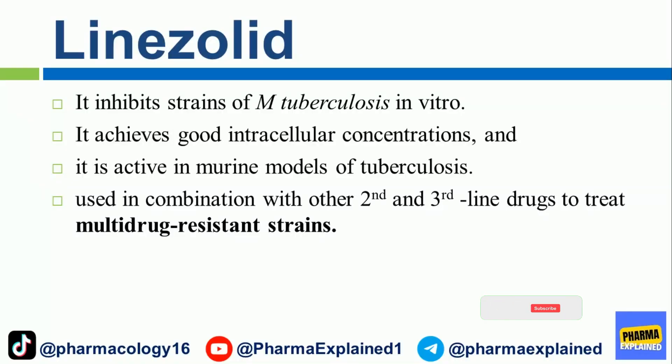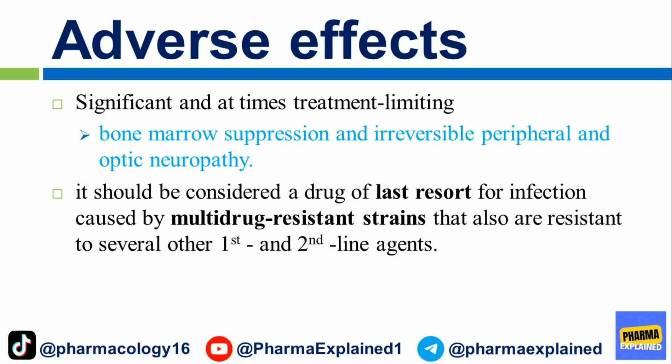Linezolid inhibits strains of M. tuberculosis in vitro, achieves good intracellular concentrations, and is active in murine models of tuberculosis. Used in combination with other second- and third-line drugs to treat multi-drug-resistant strains, its adverse effects are significant and at times treatment-limiting, including bone marrow suppression and irreversible peripheral and optic neuropathy. It should be considered a drug of last resort for infection caused by multi-drug-resistant strains that are also resistant to several other first- and second-line agents.